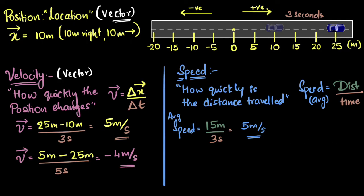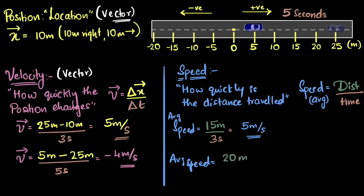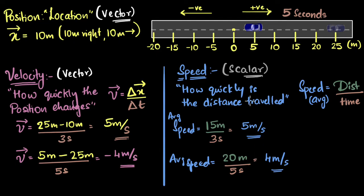Let's look at the second example to see the difference clearly. The average speed is distance divided by time. The distance traveled is 20 — not minus 20, because for distance I don't care whether it's traveling left or right, all I care about is the distance, which is 20. So it's 20 meters divided by 5 seconds, giving 4 meters per second — no negative sign. This shows the big difference: speed only has a magnitude, it does not have a direction, because distance does not have a direction. Since speed does not have a direction, it is a scalar quantity. You can think of speed as velocity without the direction.